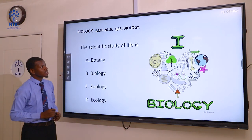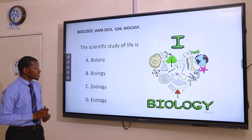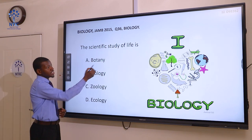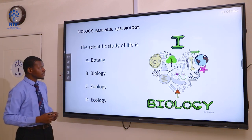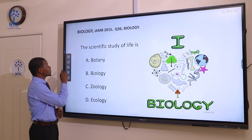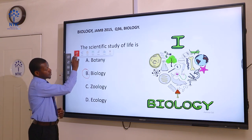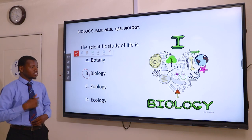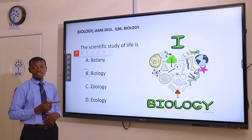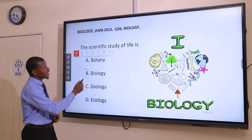Question 36. The scientific study of life is: A botany, B biology, C zoology, and D ecology. Botany is the branch of biology that studies plants. Biology is the branch of science that studies life — and that is the correct answer. Zoology is the branch of biology that studies animals. Ecology is the branch of biology that studies the interaction of living organisms with other organisms and their environment.